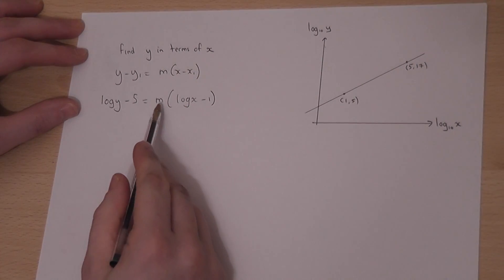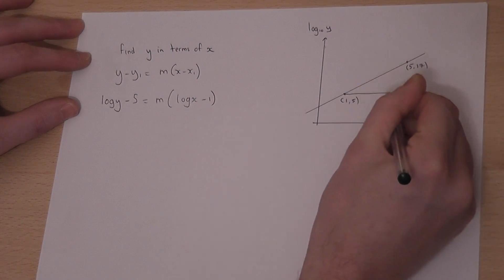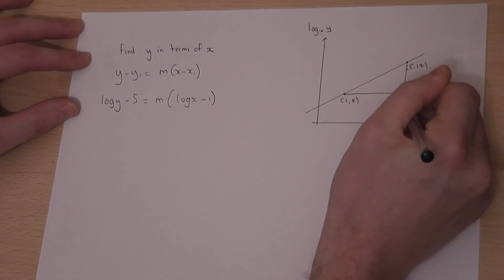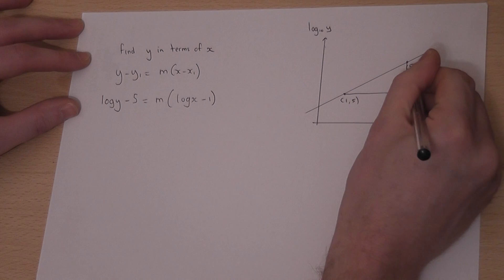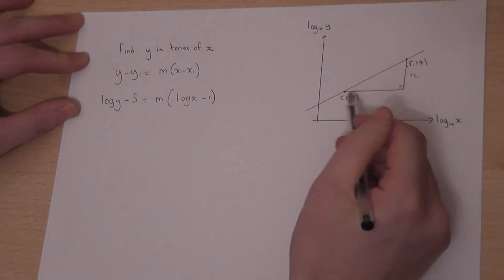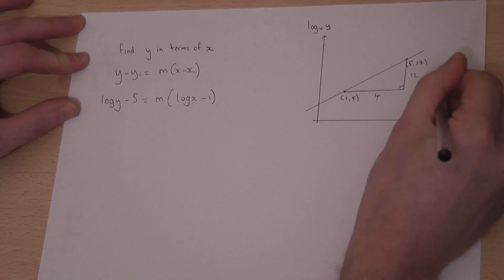We can find m as well, because m is the gradient. If I imagine a right-angled triangle under here, the change in y is from 5 to 17, which is 12. The change in x is from 1 to 5, which is 4. So, 12 over 4 is 3. So, 3 is the gradient.